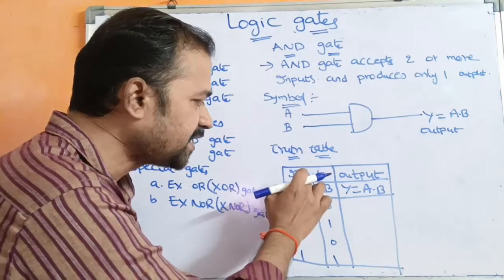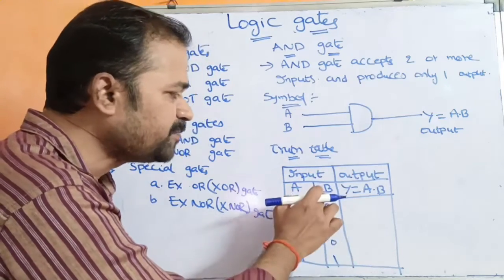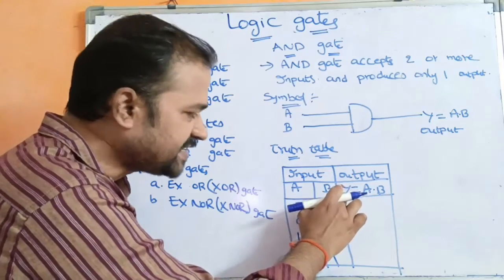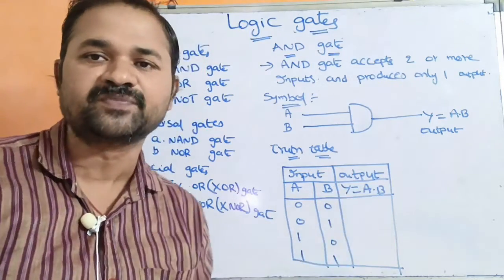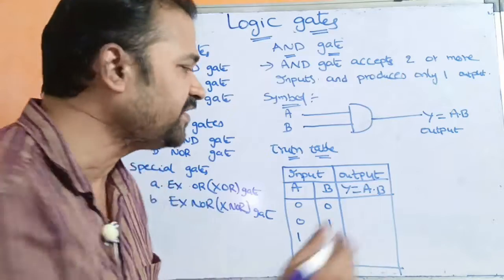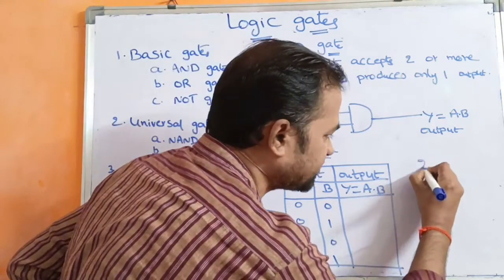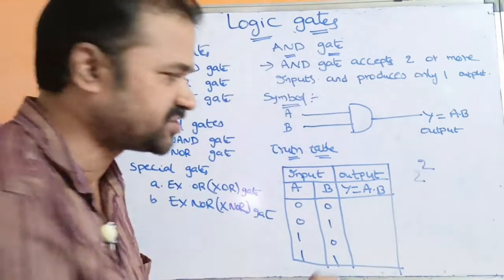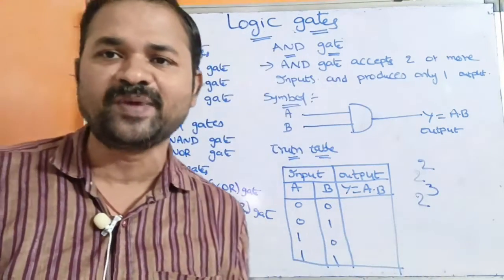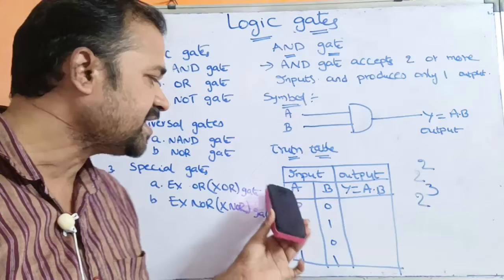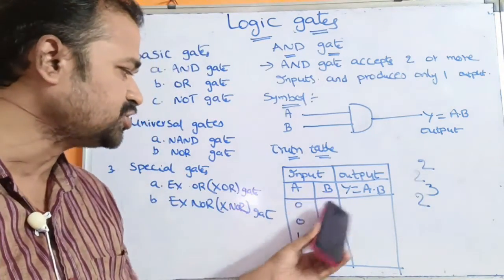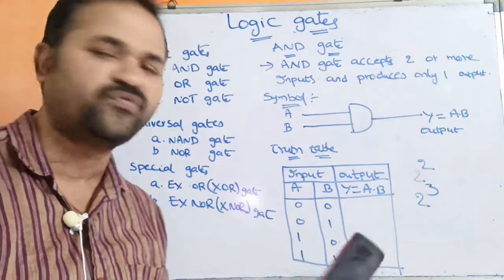Now let us see the truth table. Here we have two columns: input and output. We have two inputs A and B, and only one output Y, which is equal to A dot B. If there are two inputs, then totally we can get 2 power 2, that is four combinations. If there are three inputs, then we will get 2 power 3, that is eight combinations. Here we have two inputs, so totally we will get four combinations: 00, 01, 10, 11.